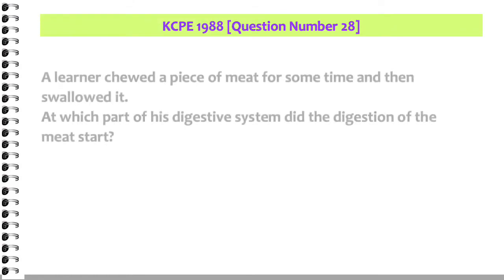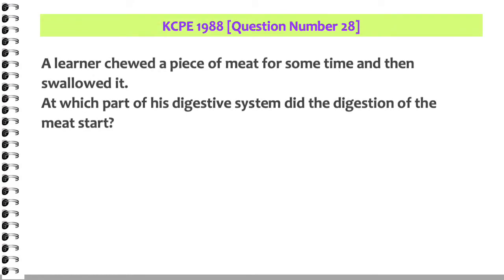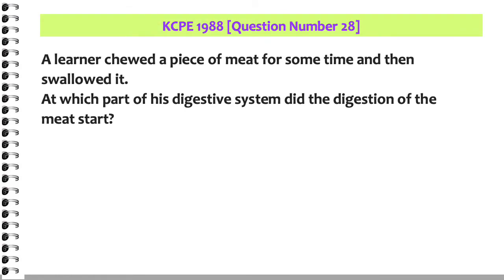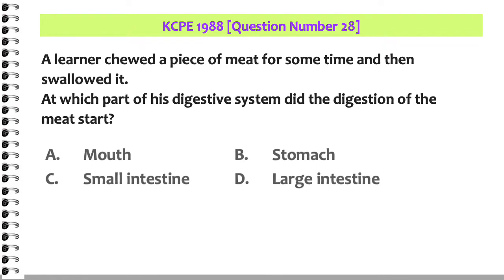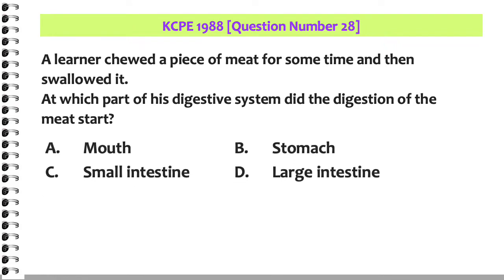A learner chewed a piece of meat for some time and then swallowed it. At which part of his digestive system did the digestion of the meat start? A. Mouth. B. Stomach. C. Small intestine. D. Large intestine.